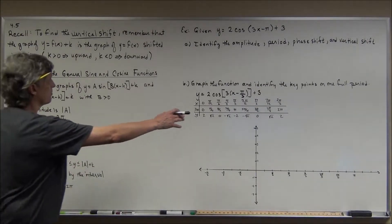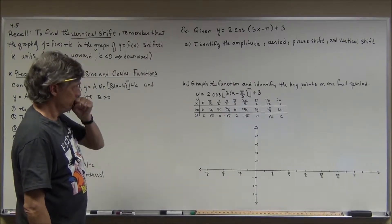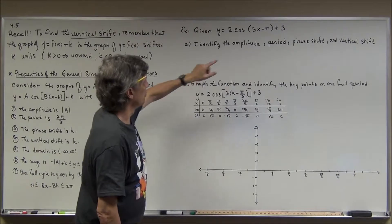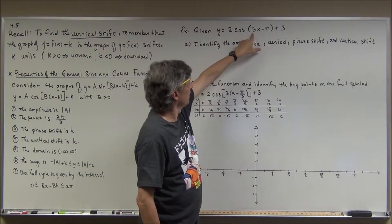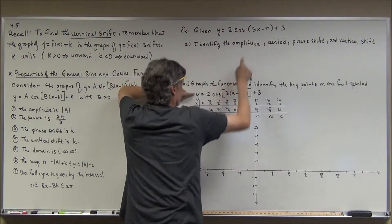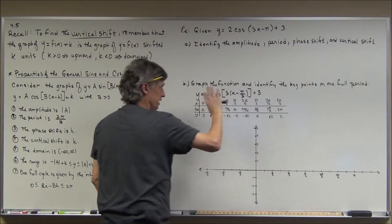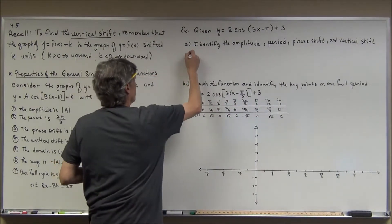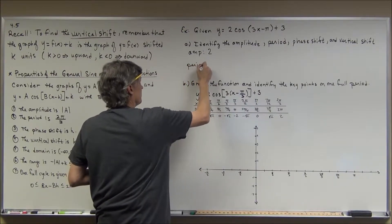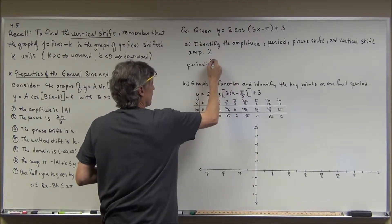The example is y = 2cos(3x - π) + 3. I want to identify the amplitude, period, phase shift, and vertical shift, then sketch the graph. The first thing I do is factor the 3 out so it becomes 2cos(3(x - π/3)) + 3. Written this way, I can clearly see a, b, h, and k. The amplitude is |a| = |2| = 2. The period is 2π divided by b, and b is 3, so it's 2π/3.